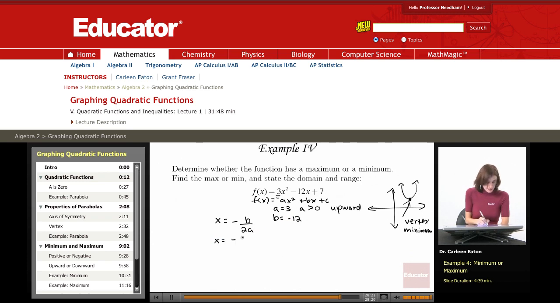So just figuring that out, that's negative times negative 12 over 2 times a, which is 3. That's going to give me a negative and a negative is a positive 12, divided by 2 times 3, which is 6. So this is going to give me 12 divided by 6. That's 2.